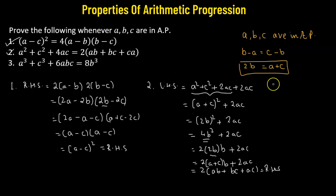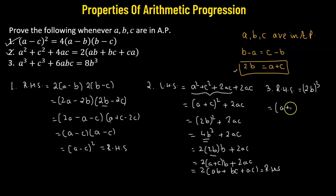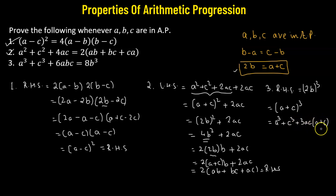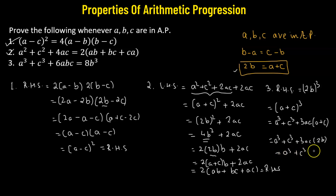Now for the third part, we start from the right hand side. We are given 8b cubed, which is simply (2b) whole cubed. In place of 2b, we use the relation a plus c, so we have (a plus c) whole cubed. Expanding this gives a cubed plus c cubed plus 3ac(a plus c). We can replace (a plus c) with 2b, giving us a cubed plus c cubed plus 3ac times 2b, which equals a cubed plus c cubed plus 6abc. This is the expression on the left hand side, so part 3 is also proved.